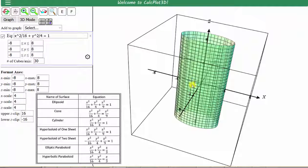Now let's graph the hyperboloid of one sheet, which is given by the equation x squared divided by 16 plus y squared divided by 4.